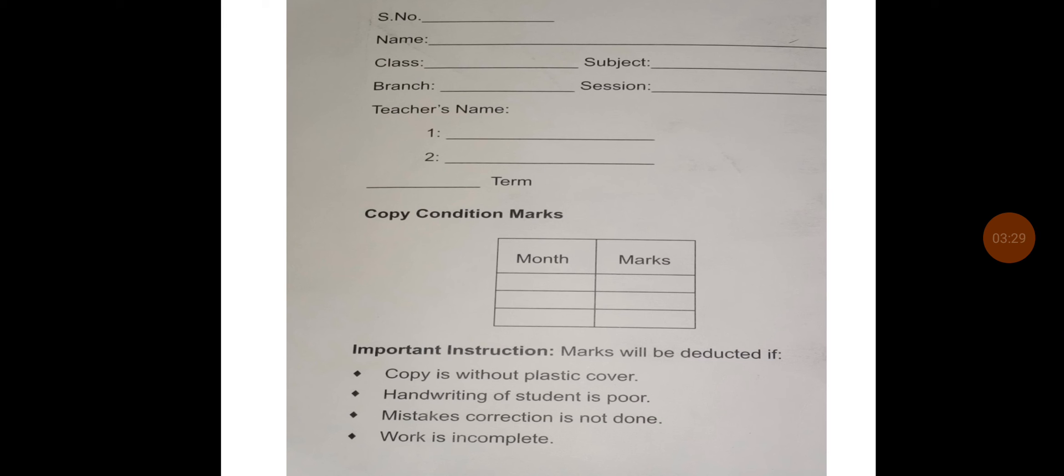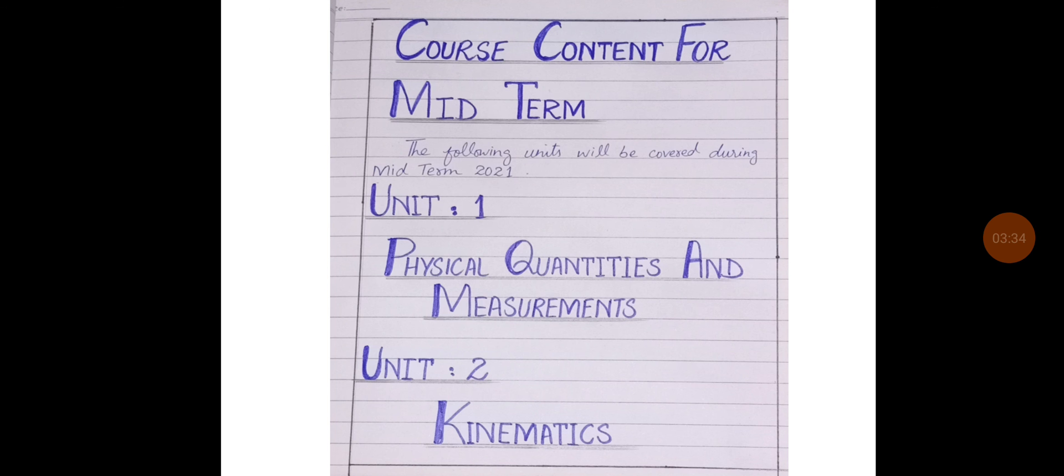You will start your work from the very first page. Don't leave any page and write neatly and carefully. The page should be blocked properly with black marker and lines should be straight and write all the headings with blue marker. The first letter should be in two lines and the rest of the letters in one line. Now, how you work or write your course content on the first page.